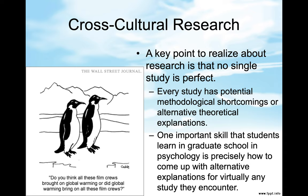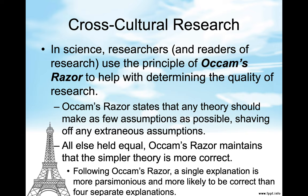A key point to realize about research is that no single study is perfect. Every study has potential methodological shortcomings or alternative theoretical explanations. In science, researchers use the principle of Occam's razor to help determine the quality of research. Occam's razor states that any theory should make as few assumptions as possible, shaving off extraneous assumptions. All else held equal, the simpler theory is more correct, and a single explanation is more parsimonious and more likely to be correct than four separate explanations.